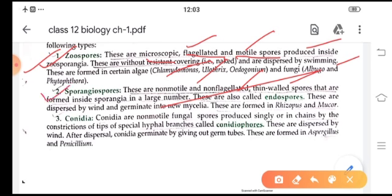Number two is sporangiospores. These sporangiospores, they are non-motile, non-flagellated, thin-walled spores. Why they are non-motile? Because flagella is absent. Thin-walled spores and spores are formed inside the sporangia. They are known as endospores because spores are formed inside the sporangia. These are dispersed by wind and they grow into a new mycelium. These are found in Rhizopus or Mucor or algae.